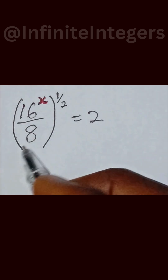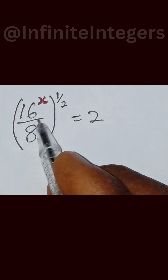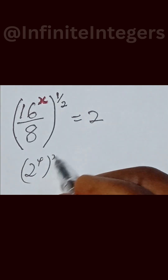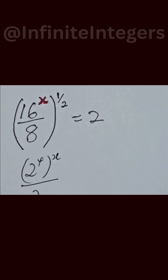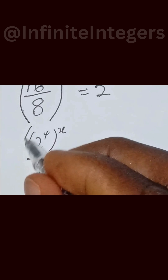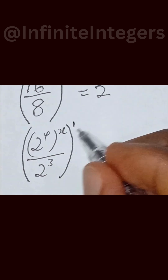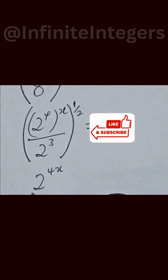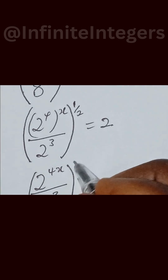To get the value of x, all we need to do is write this as 2 raised to power 4, into bracket raised to power x over 2 raised to power 3, then all into bracket raised to power half, equal to 2. Let's write this together: we have 2 raised to power 4x over 2 raised to power 3, all into bracket raised to power half, equal to 2.